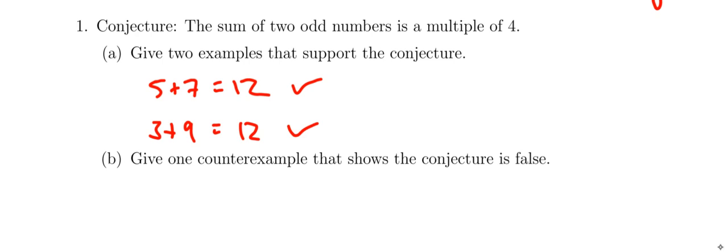But give a counterexample that shows the conjecture is false. Okay, well, if I take for example, let's say, eleven and fifteen, both of which are odd numbers, if you add those together you get twenty-six, and this is not a multiple of four.